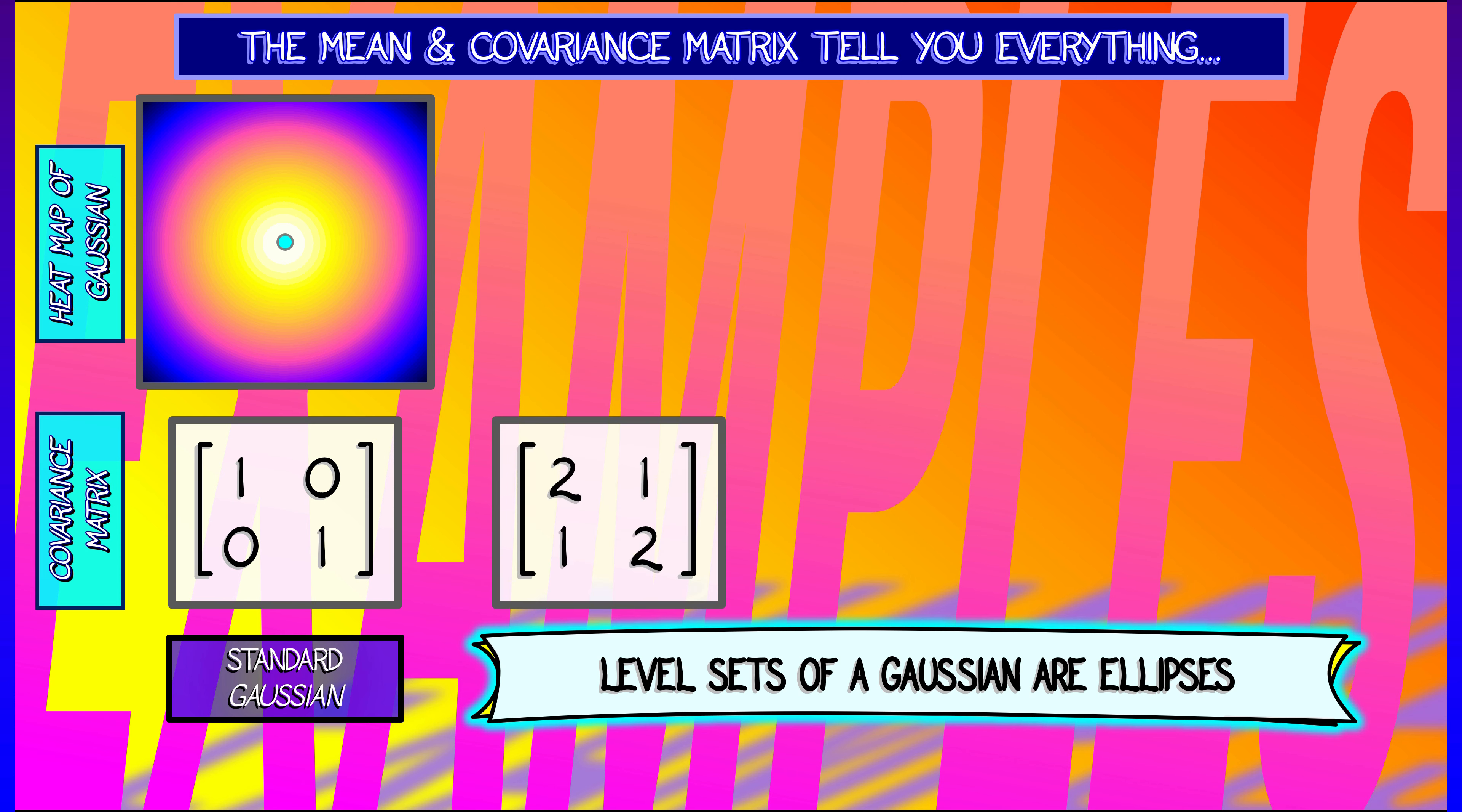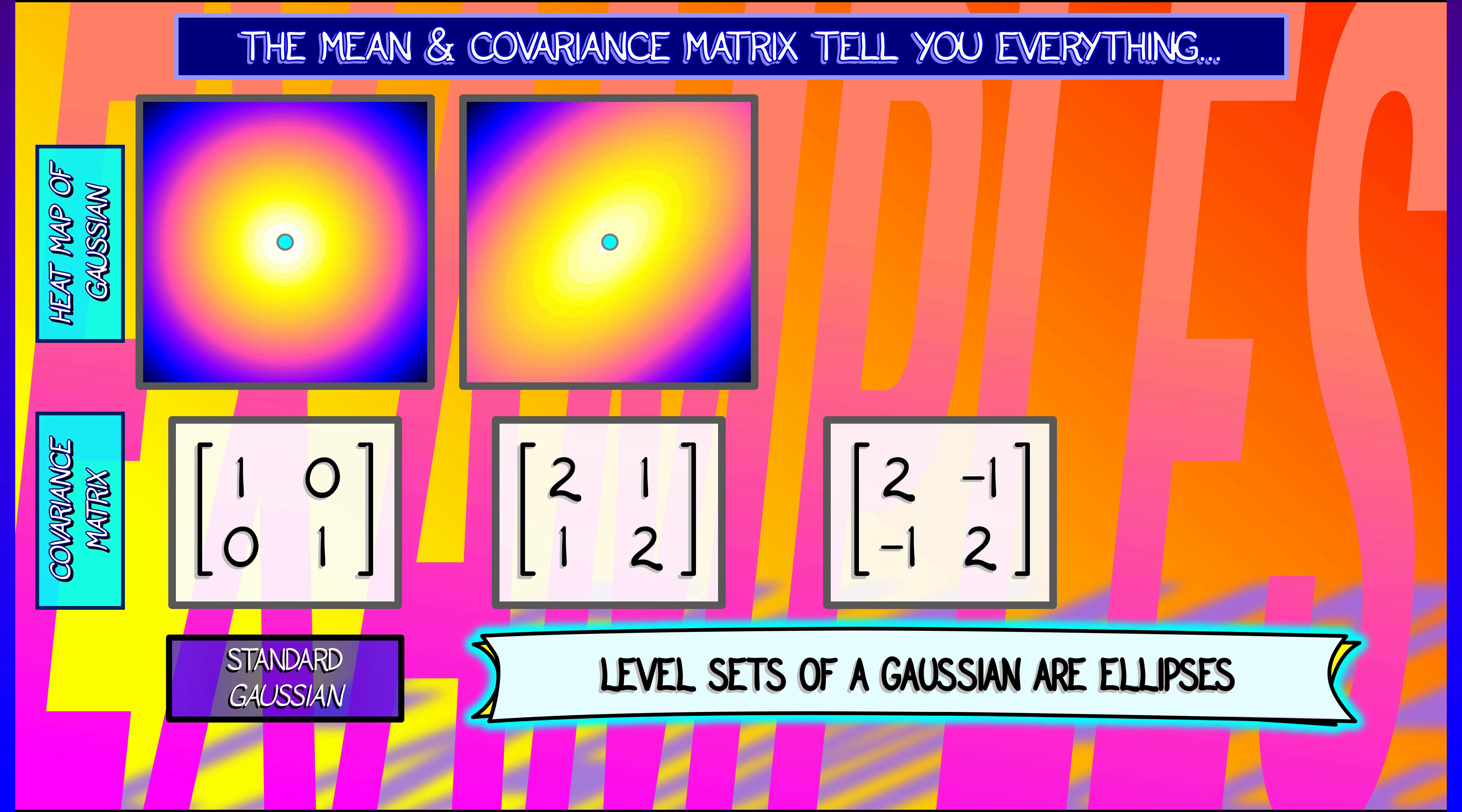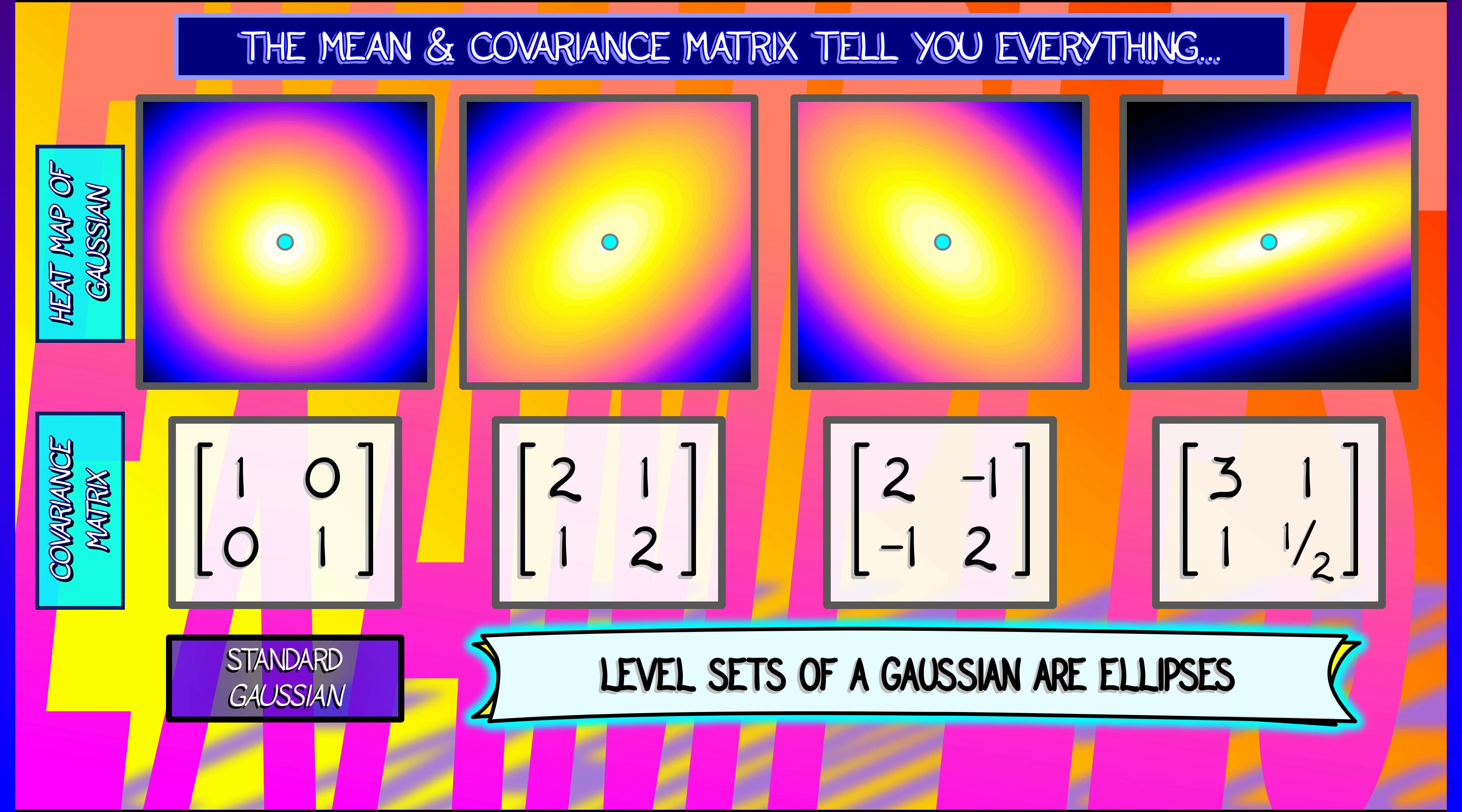So if I have a different covariance matrix, maybe one with a positive covariance between the two variables, then I would get ellipses that tilt to the upper right with a positive slope. If I had negative covariances between the variables, then I would have a negative slope for my level set ellipses. And the eccentricity of these ellipses depend on how strong the correlation is between the variables.